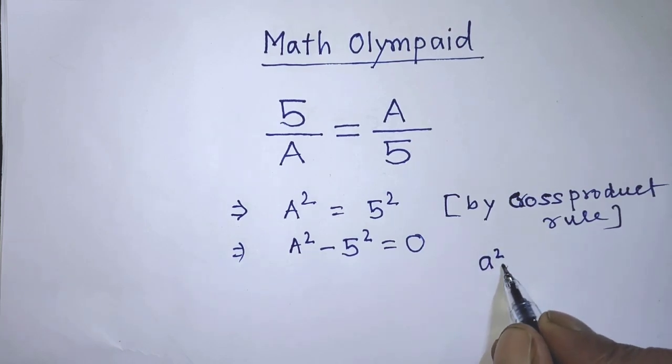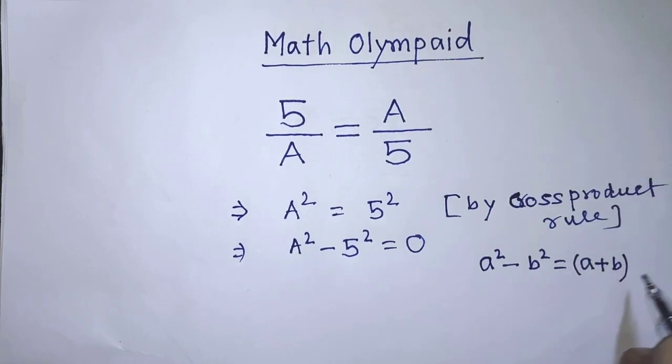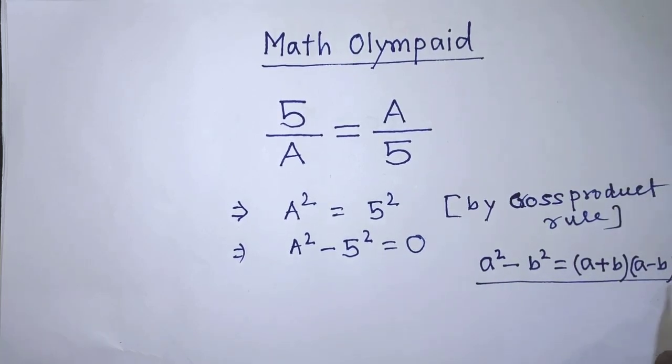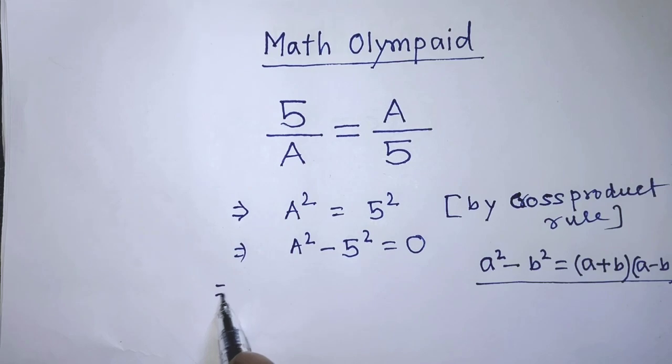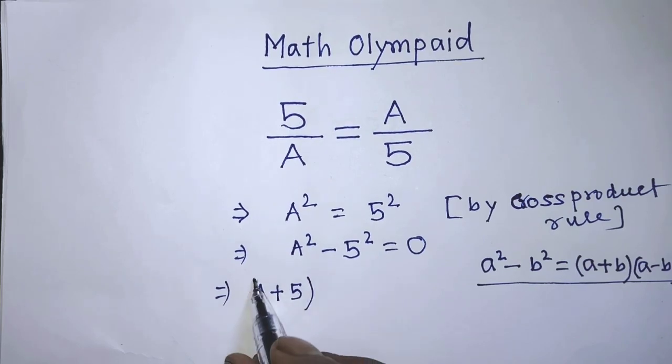A to the power 2 minus B to the power 2 equals A plus B times A minus B. According to this formula, we can write from the left hand side of this equation A plus 5 times A minus 5 equals 0.